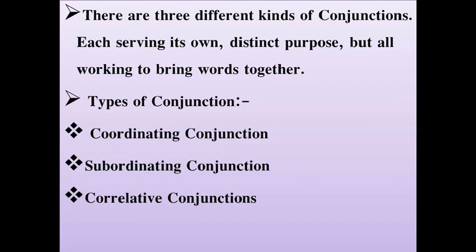There are three different kinds of conjunction, each serving its own distinct purpose, but all working to bring words together. Types of conjunction: the first type is coordinating conjunction, after that subordinating conjunction, and the third type is correlative conjunctions.